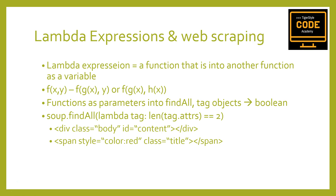For example: soup.find_all(lambda tag: len(tag.attrs) == 2) — this retrieves all tags that have exactly two attributes. The length of the tag's attributes is equal to two. So using lambda functions in Beautiful Soup selectors can be very powerful.